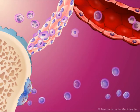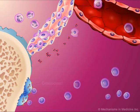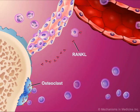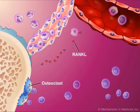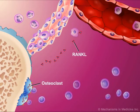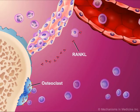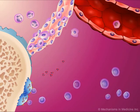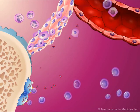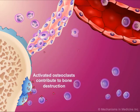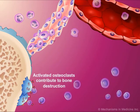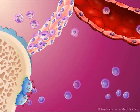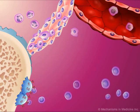The fibroblast-like synoviocytes may also release receptor activator for nuclear factor kappa-B ligand, or RANKL, leading to the activation of nearby osteoclasts, which target and enzymatically destroy the bone.